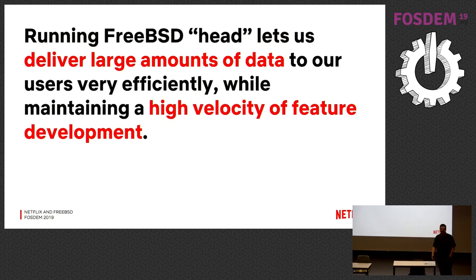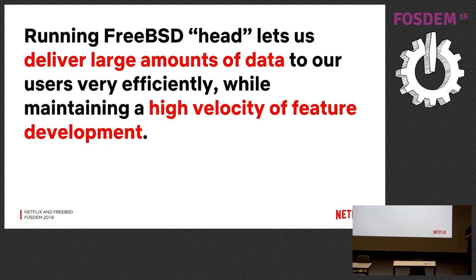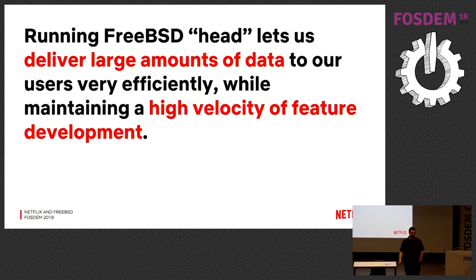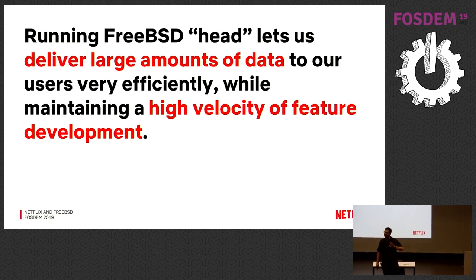In conclusion, running FreeBSD Head has been really, really good for Netflix. It lets us deliver very large amounts of data throughout the internet very efficiently while maintaining a high degree of feature velocity. We've found FreeBSD Head to be very stable — stable enough that we deploy their commits in our network about five to fifteen weeks after they're committed. It lets us deliver a large amount of traffic very efficiently and maintain our development agenda. We're very happy using FreeBSD and using their head branch as the basis for our operating system.